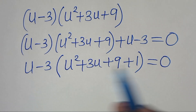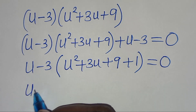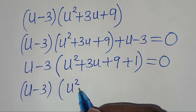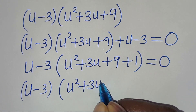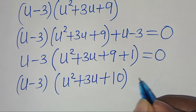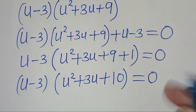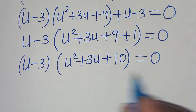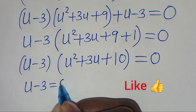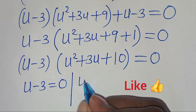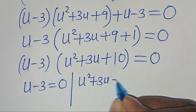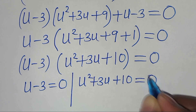So we have two parts here. The first part is u minus 3, which is equal to 0. The second part is u squared plus 3u plus 10, and this is equal to 0. From the first part, we have u minus 3, which gives a real root.